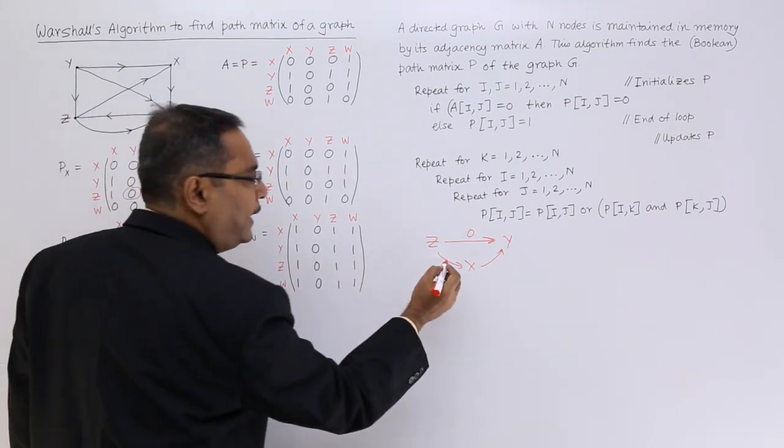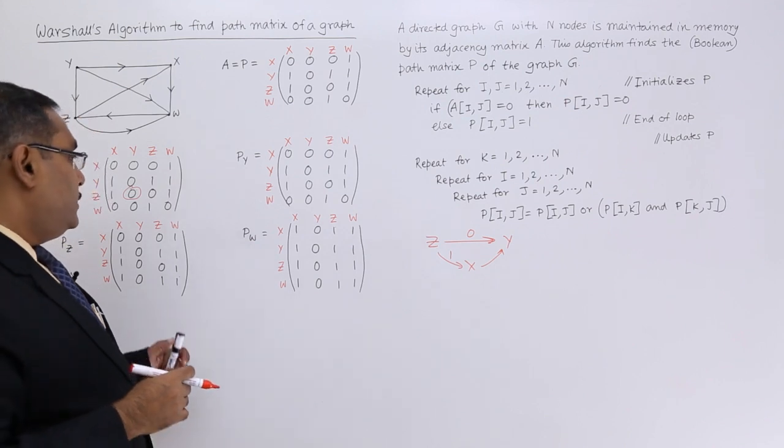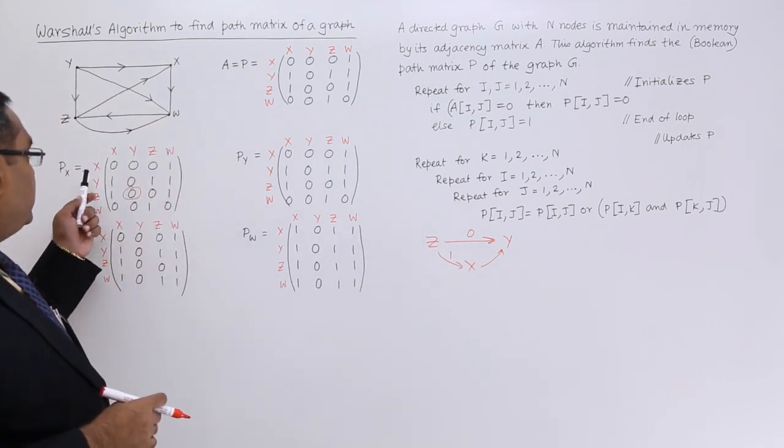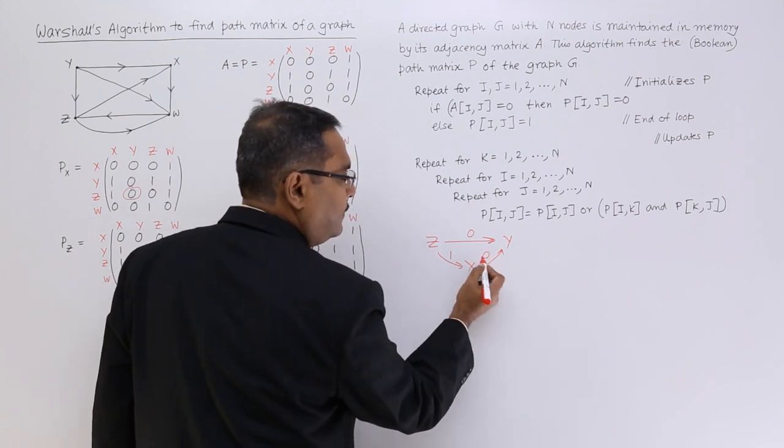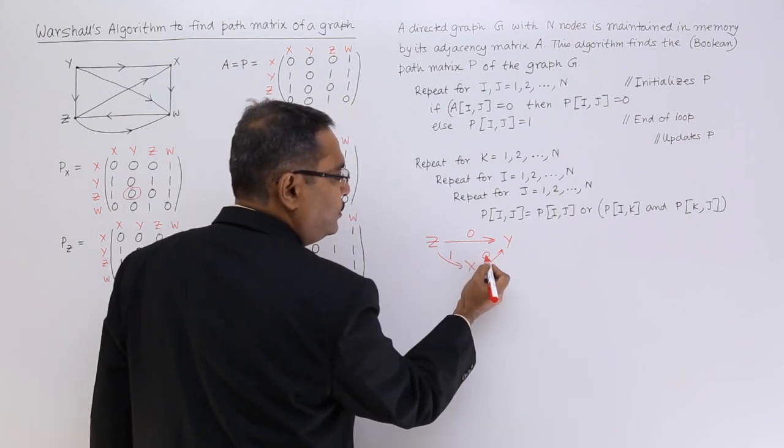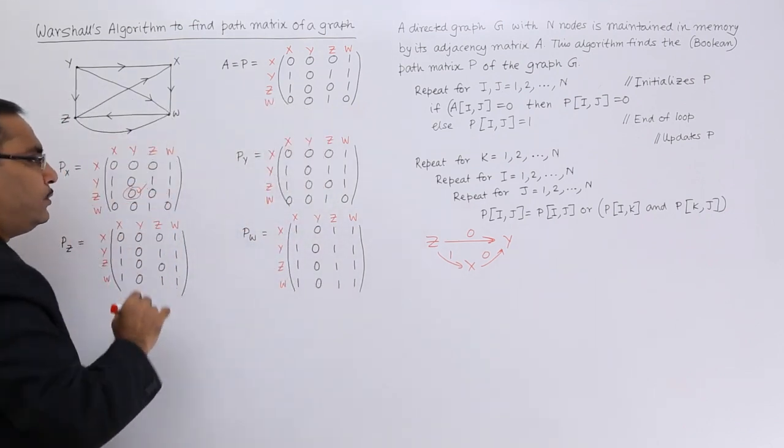z to x is 1, so I am highly optimistic that we are going to get another parallel path. But from x to y we are getting 0. If you take the and, 1 and 0 is equal to 0, and 0 or 0 is equal to 0. That is why this value is still 0.